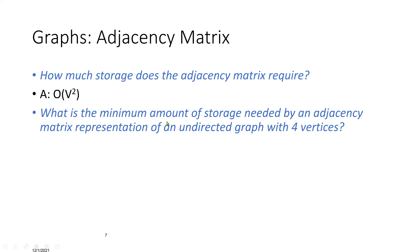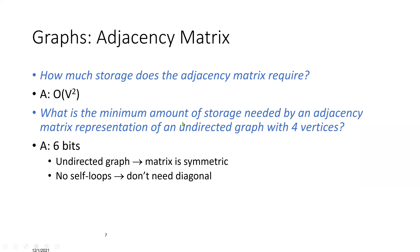Another question: what is the minimal amount of storage needed by an adjacency matrix representation of an undirected graph with 4 vertices? The example we gave was a directed graph. An undirected graph means if we have an edge from 1 to 2, it can go both directions — 1 to 2 and 2 to 1. Since it's an undirected graph with 4 vertices, we are going to have 6 bits. The matrix will be symmetric, and here we assume there are no self-loops, so we don't need the diagonal.